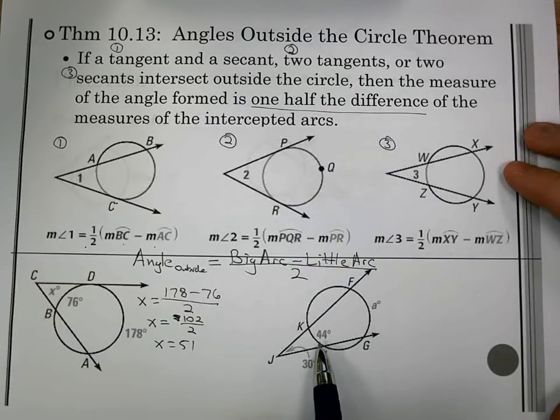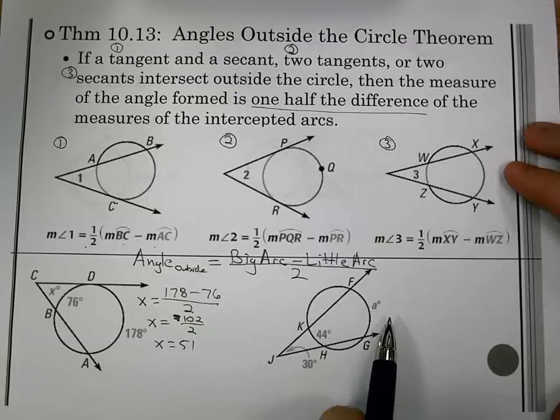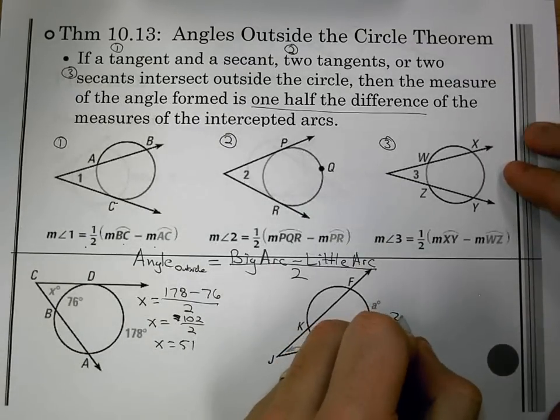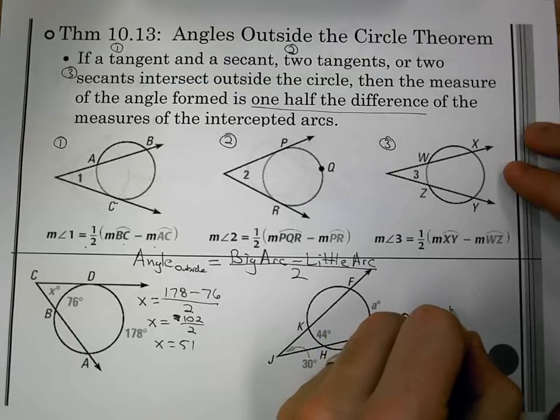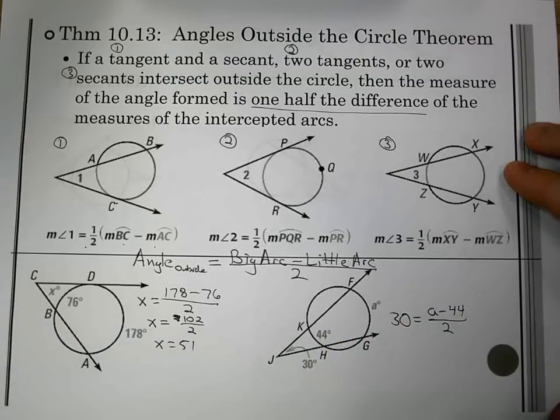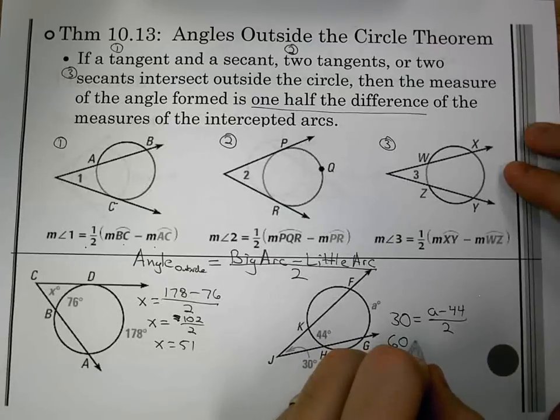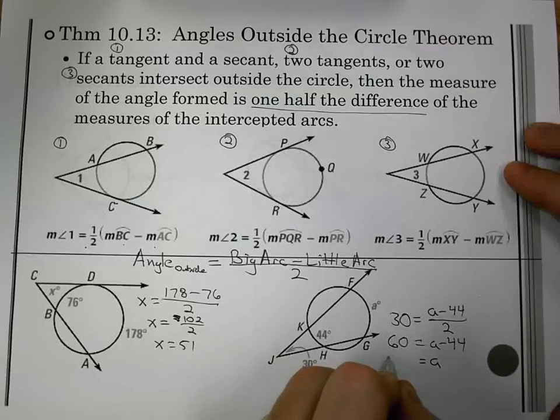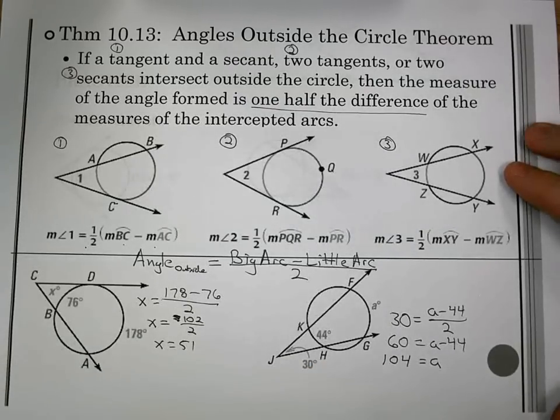Next one. Now, this one we have to be careful because some students tend to pick 44 as the big arc. It's not. We can clearly see A is the big arc. Keep in mind the bigger arc is always further from the angle, but we get 30 equals A minus 44 divided by 2. That becomes 60 equals A minus 44. I then add 44 and I get 104 is equal to A.